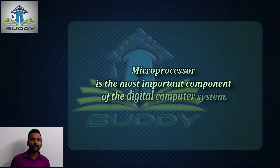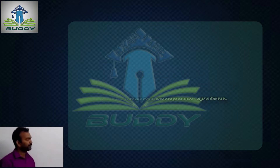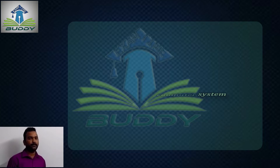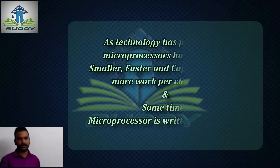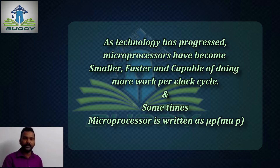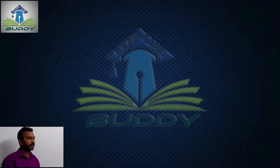Microprocessor is the most important component of the digital computer system. It acts as the brain of the computer system. As technology has progressed, microprocessors have become smaller, faster, and capable of doing more work per single clock cycle.